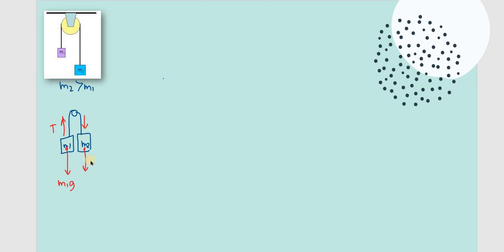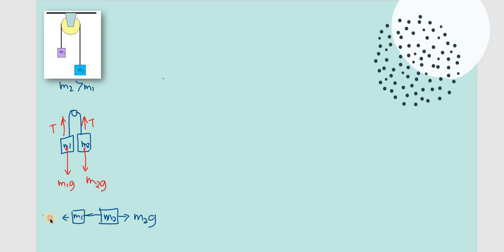We can draw this in a horizontal position so it's easy to imagine. M1 is on one side, M2 on the other. The force pulling M2 is M2G, and the force pulling M1 is M1G. The tension acts in the opposite direction, so they'll have the same tension force.